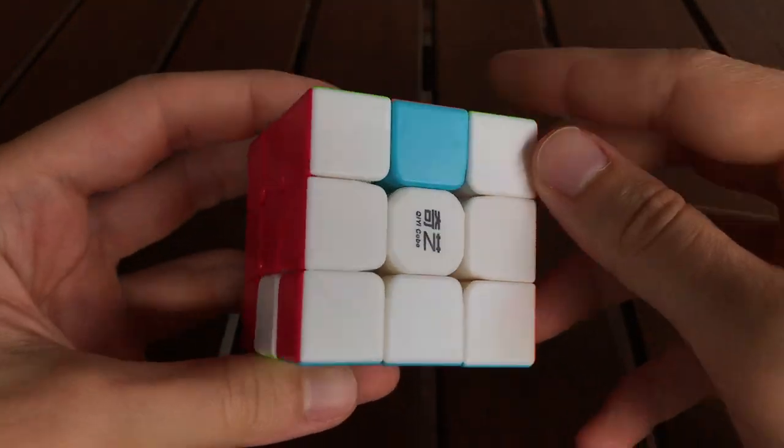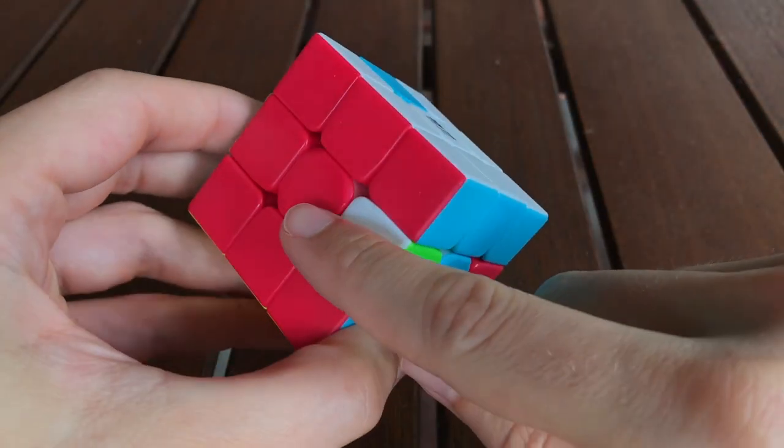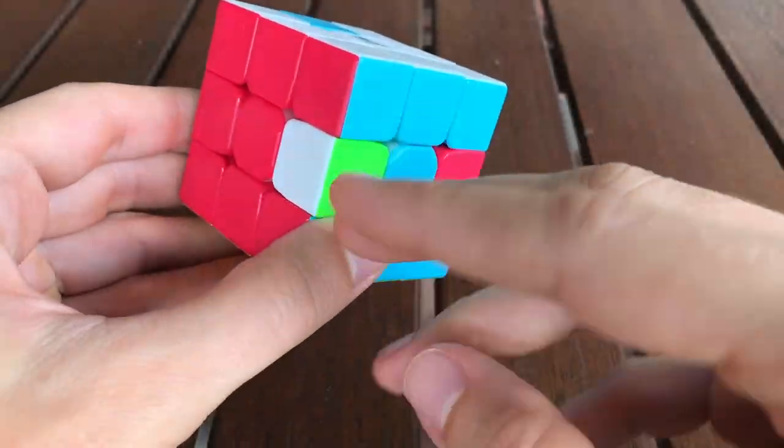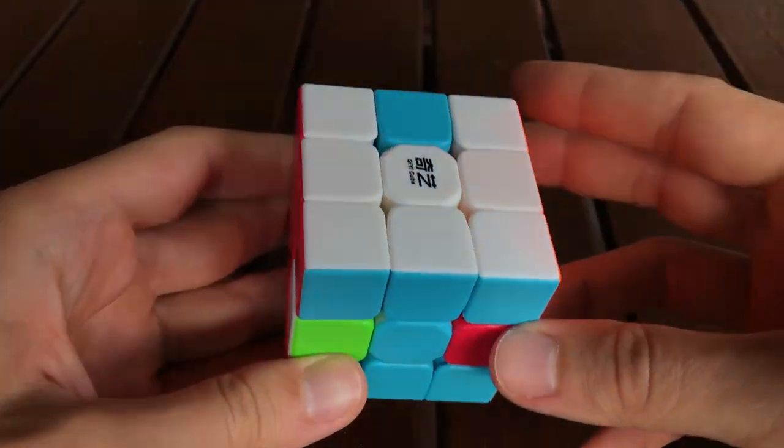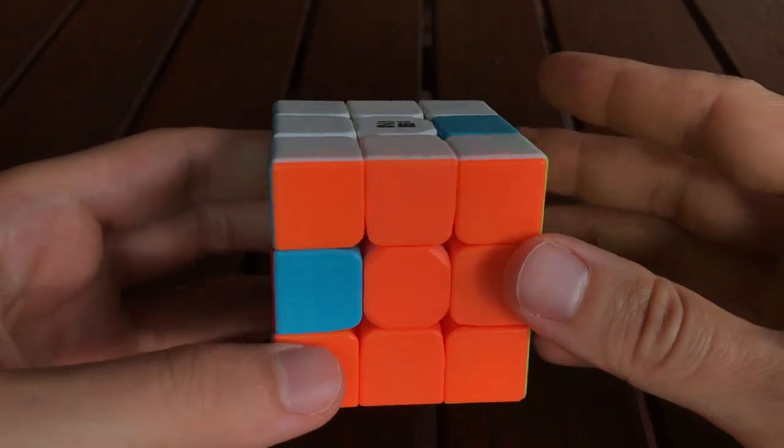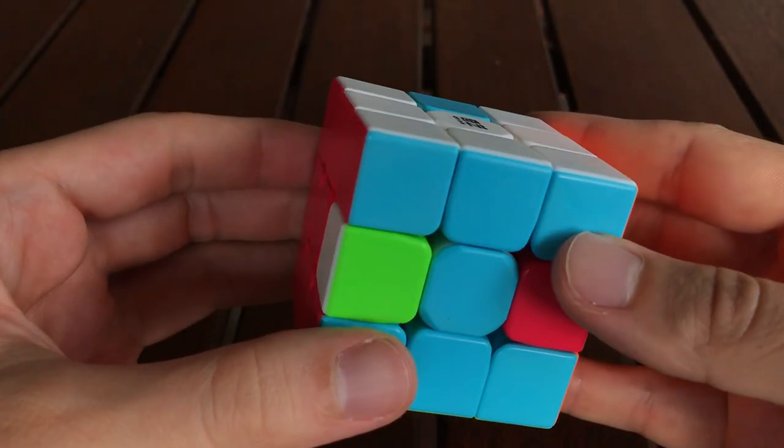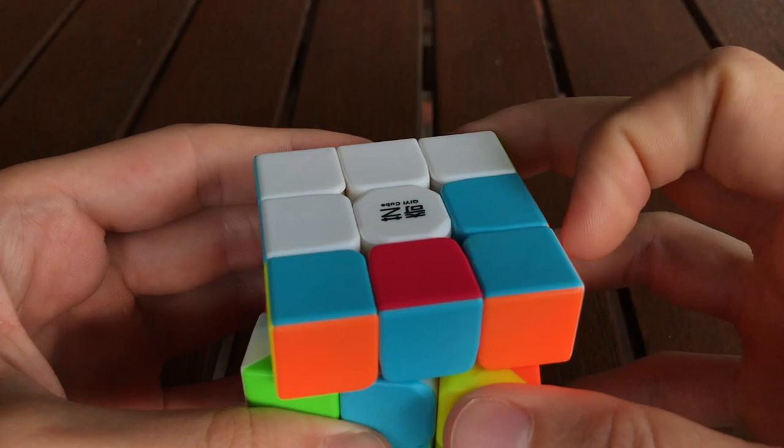And similarly, the green and white stickers are different from how they were before. They're flipped. So this algorithm has permuted the same three edge pieces as before, except there's one parity flip between the orange and blue piece and the green and white piece.